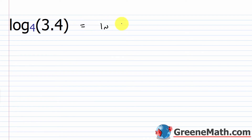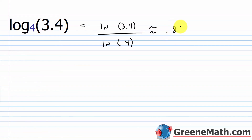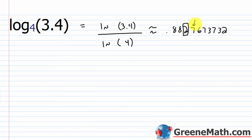For log base 4 of 3.4, let's use the natural logarithm this time: ln of 3.4 over ln of 4. My calculator gives me 0.8827673732. The digit after the third decimal place is 7, which is 5 or greater, so I round up — this is approximately 0.883.